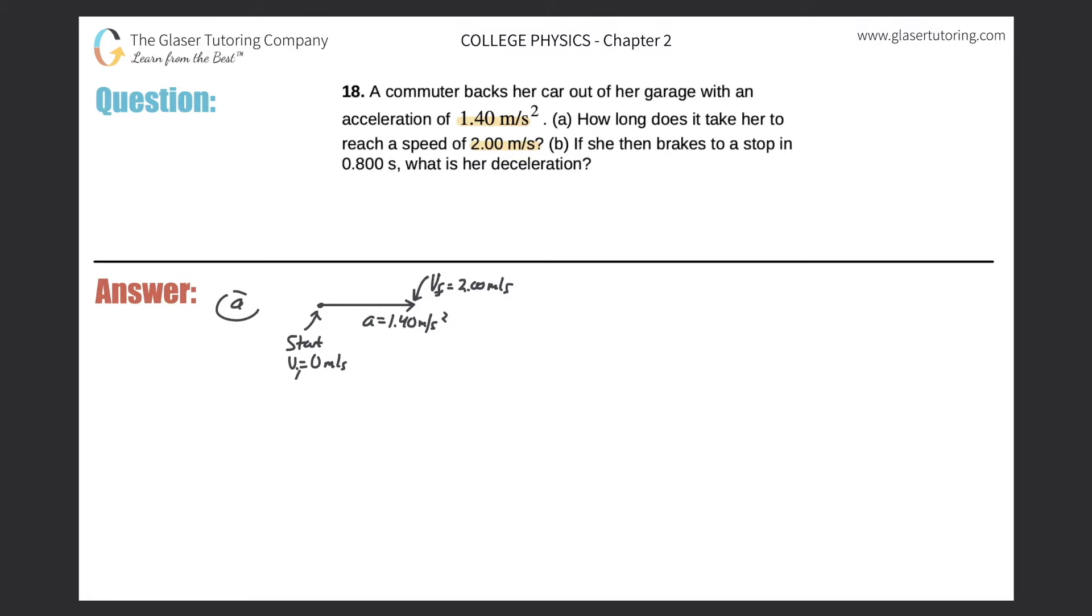And they're asking us to calculate the time which it took to go from zero meters per second to two meters per second. So let's think about, do we know a formula that relates all of these variables together? The velocity, the acceleration, the time?